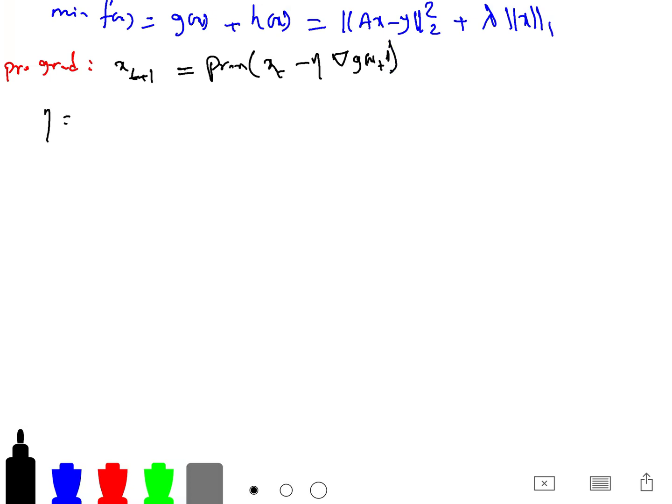When eta is 1 over beta, where g is beta smooth - the gradient is beta Lipschitz, so the gradient is bounded by beta coefficient - x_t+1 is equal to arg min of lambda ||x||_1 plus beta over 2 times ||x - (x_t - 1/beta gradient of g(x_t))||^2.